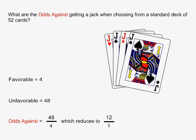Odds against is equal to unfavorable over favorable, which is equal in this case to 48 over 4, and this reduces to 12 over 1.